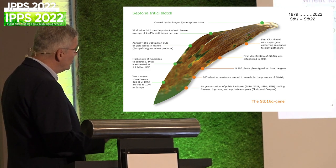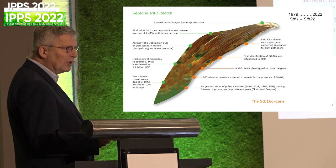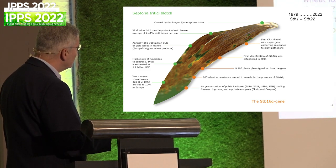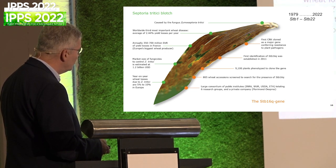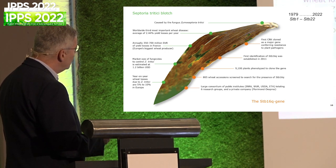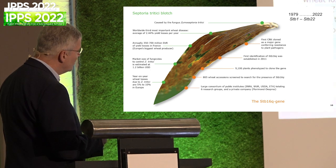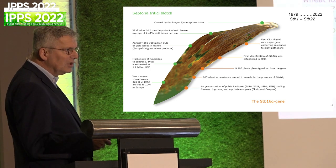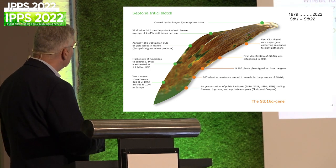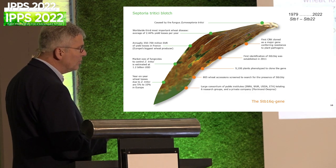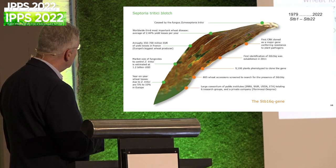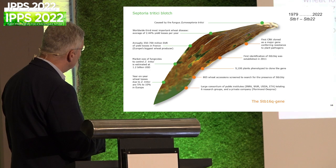We also mapped and cloned genes. The last gene cloned by the whole team - of which I was part - was STB16Q. That represents 25 years of research in this fungus. Zymoseptoria tritici is still a major pathogen in Europe.